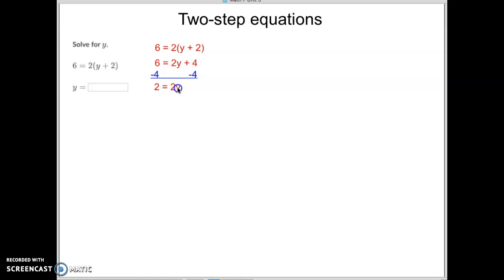Now, we have 2 being multiplied by y right there. 2 and y are being multiplied. What's the opposite of multiply? How can I cancel that out? What would cancel out a multiplication? Hopefully you just thought to yourself, division, divide by 2. So that's what we're going to do.